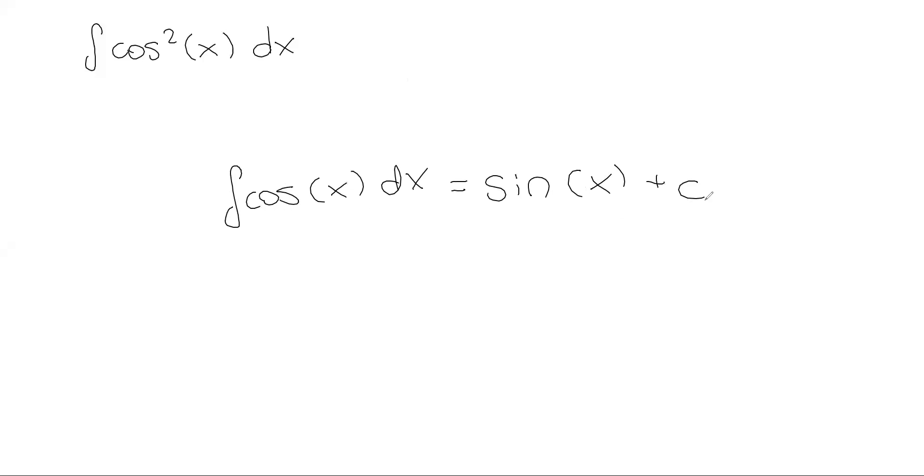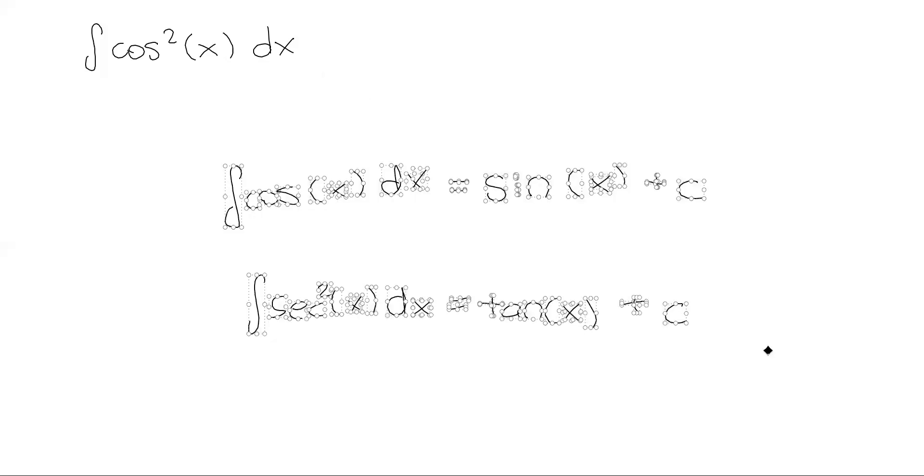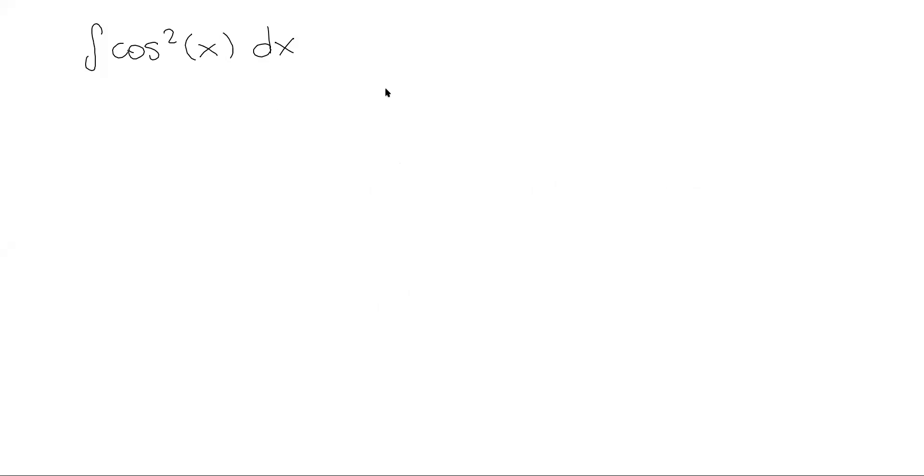It also applies to something like the integral of secant squared of x dx. We want to ask ourselves what function do we take the derivative of and get secant squared? The answer to that question would be tangent of x. So these are pretty simple, but what about ones that don't really make too many appearances on elementary antiderivative tables?